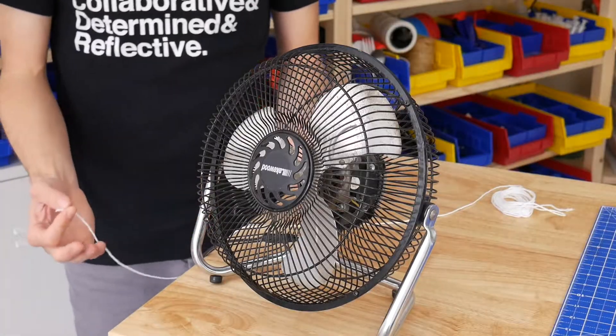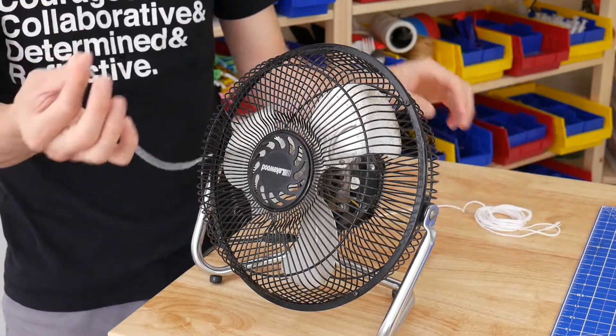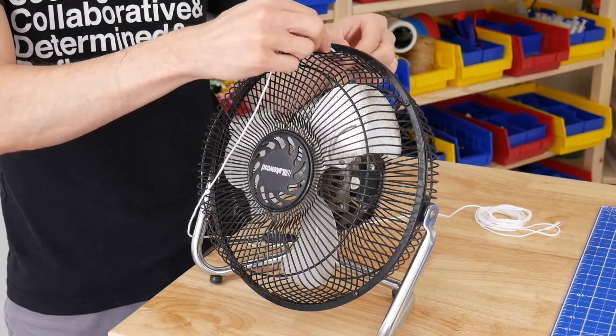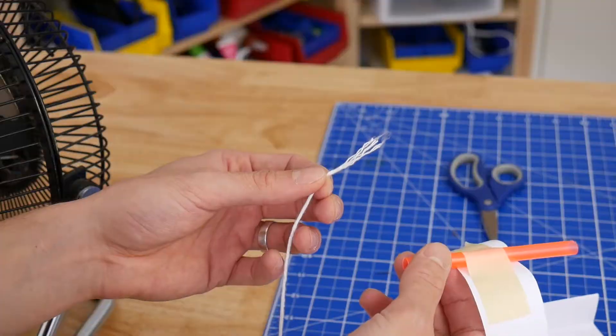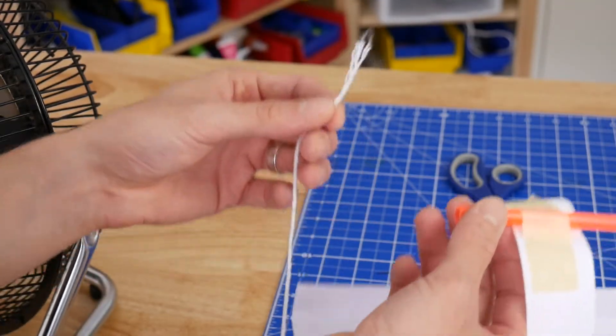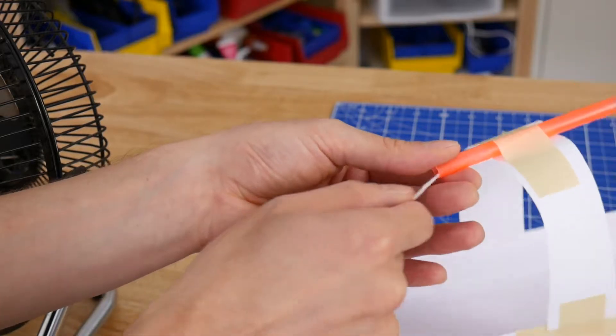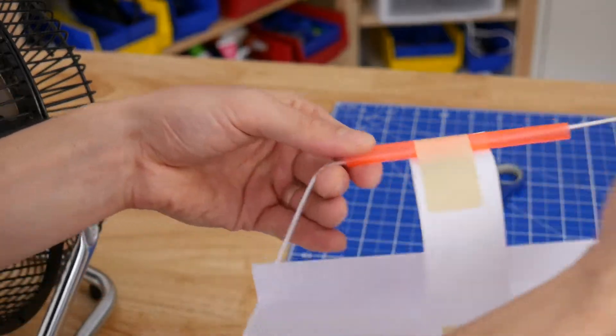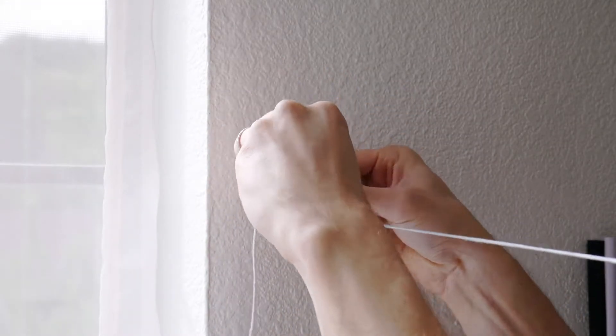Now we need to set up the zipline and the first step is to cut a 10 to 12 foot length of string and tie one end of it to the top of the fan. Before anchoring the other end of the string make sure to thread it through the straw of the carrier base. Then tie the string somewhere on the other side of the room so that the string is parallel to the ground.